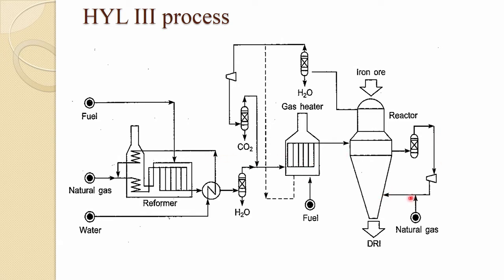Some natural gas is added because this is actually a fluidized bed where material is mostly in a fluidized condition. The iron ore, being of smaller particle size, gets reduced in fluidized condition. Quite hot cooling gas — unheated natural gas — cools it down, and DRI comes out from the bottom.